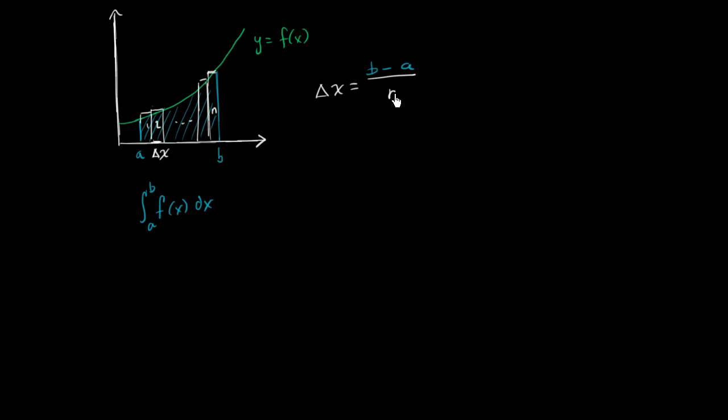We divide it by n, which is common sense. We're just taking this length and dividing it by n to get n equal spacings of delta x.